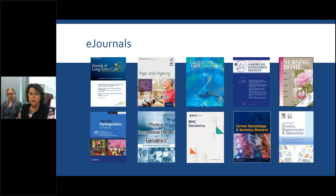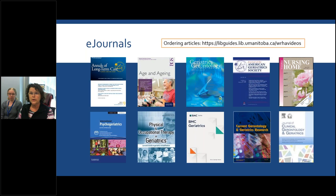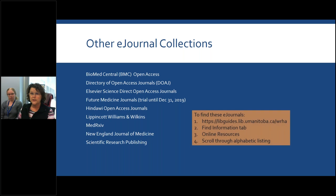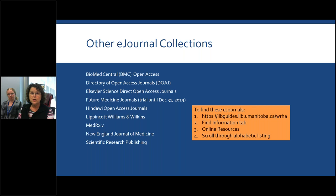If journal titles are missing from our collection that would be useful for your department, let us know and we'll see what we can do about getting those added. Also, if articles are embargoed or we simply don't subscribe to that journal, you can request it by ordering the full text. We have a URL handy so that if you forget how to order articles, there's a very short under-three-minute video on how to do that.